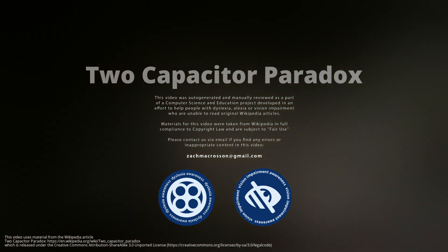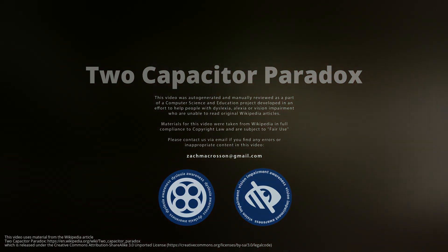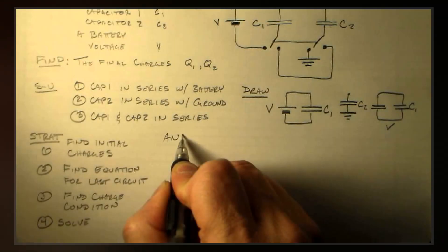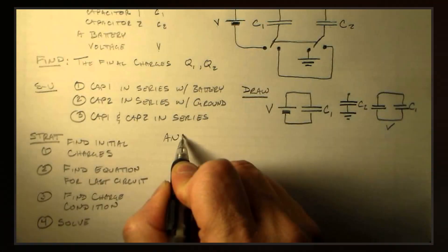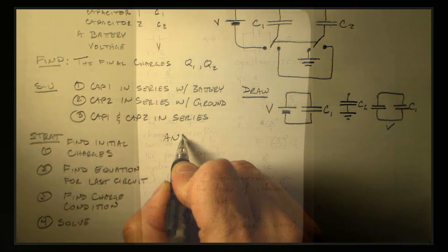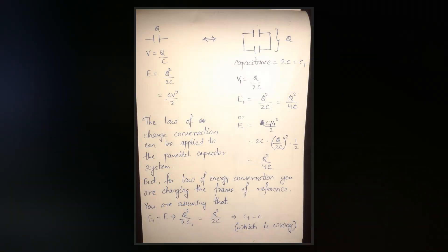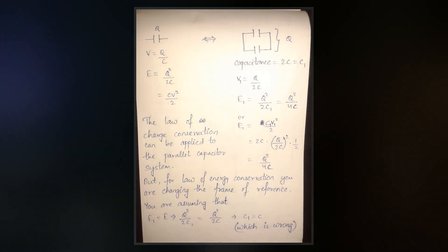The two-capacitor paradox, or capacitor paradox, is a paradox or counterintuitive thought experiment in electric circuit theory. The thought experiment is usually described as follows: Two identical capacitors are connected in parallel with an open switch between them.